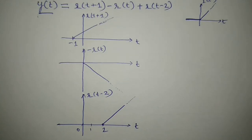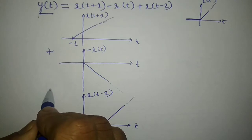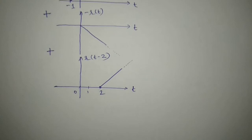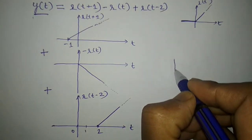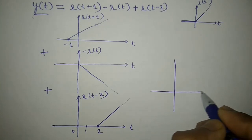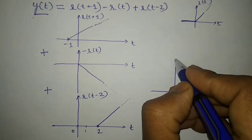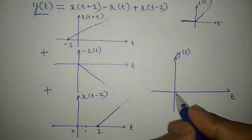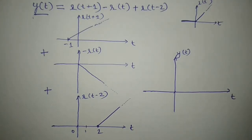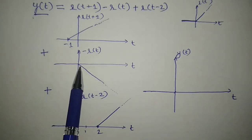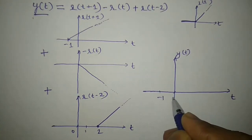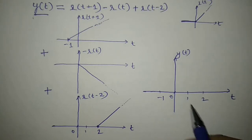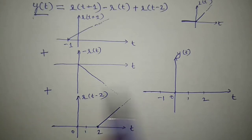These are the three final signals: r(t+1), minus r(t), and r(t-2). I need to add them to get the final signal y(t). The possible limits come from where each signal starts: the first signal starts at minus 1, then 0, and the last at 2. So the limits are: minus 1, 0, 1, and 2. I will add all these signals unit by unit, step by step, starting from minus 1.